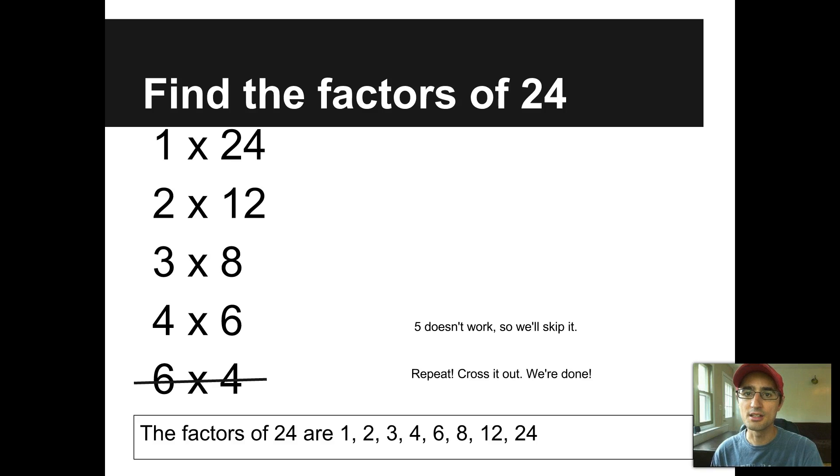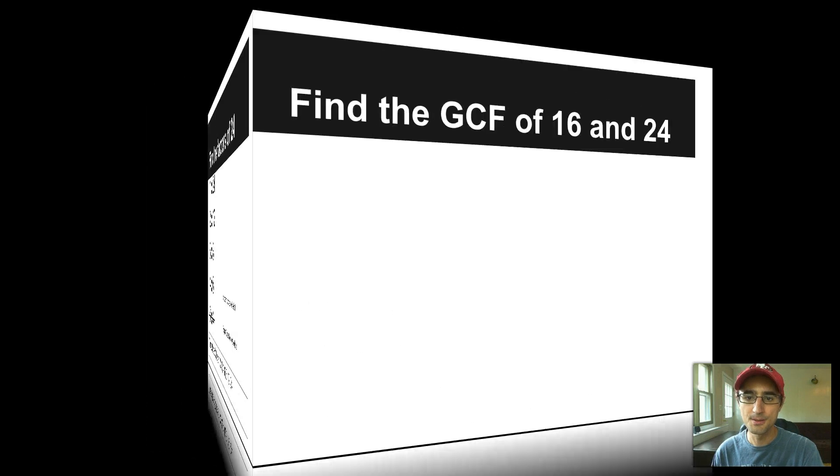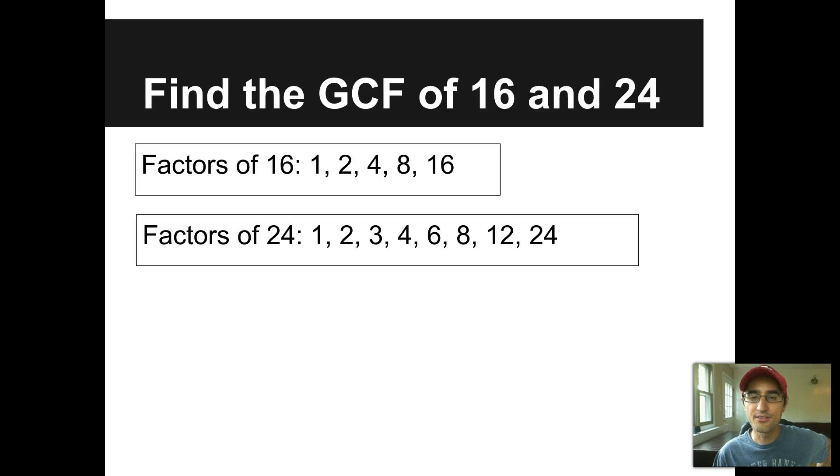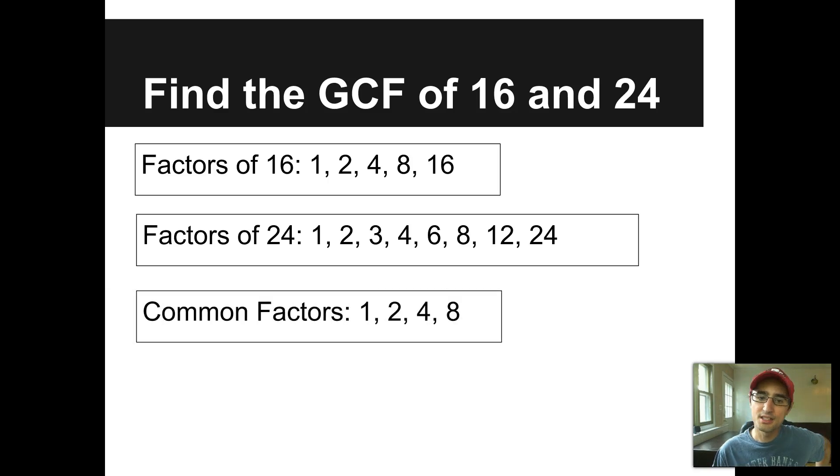So now we've found the factors of 16, the factors of 24. The next thing I want to talk about is what do they share in common? We'll list common factors and then find the greatest common factor of those two numbers. Let's write this down. Find the greatest common factor, GCF, of 16 and 24. If we list our factors of 16 again, they're 1, 2, 4, 8, and 16. And listing our factors of 24 again, 1, 2, 3, 4, 6, 8, 12, and 24.